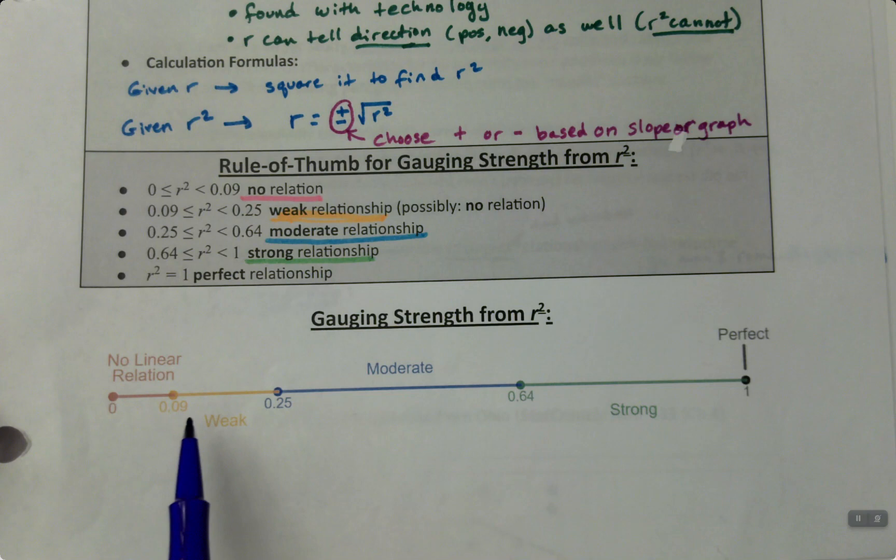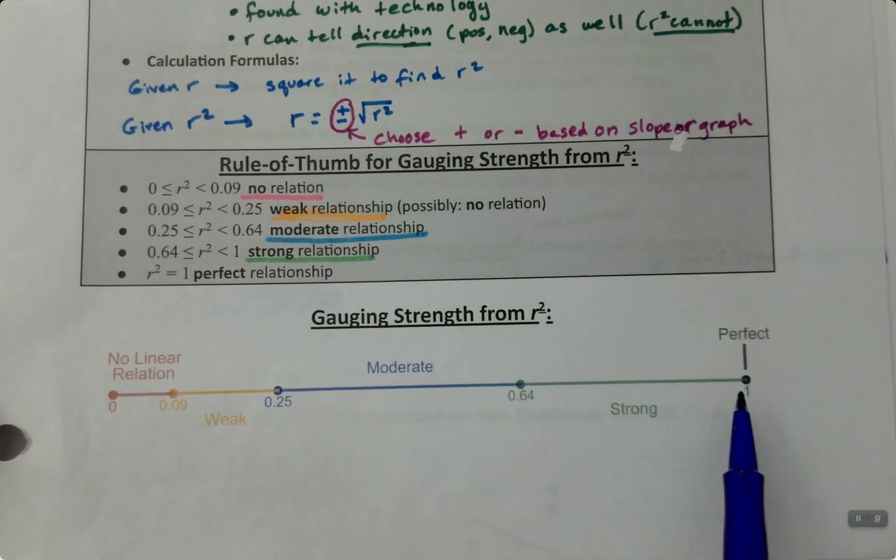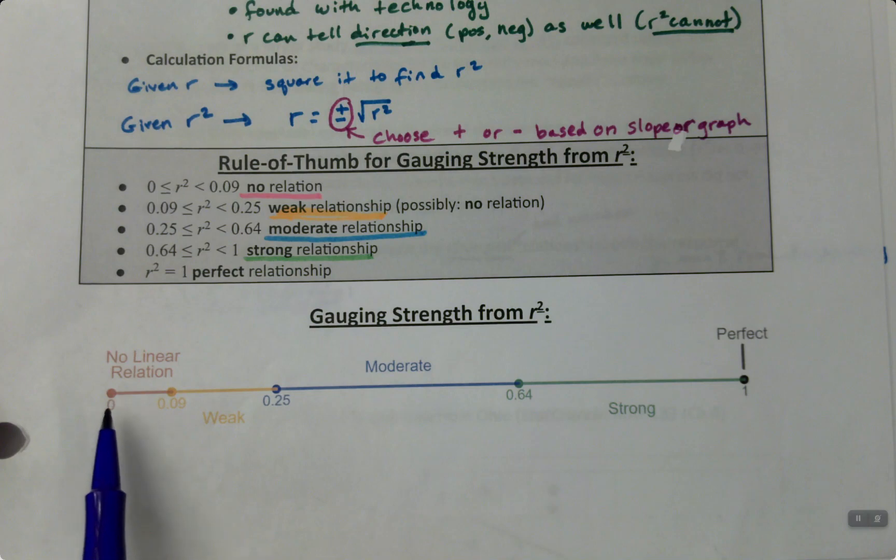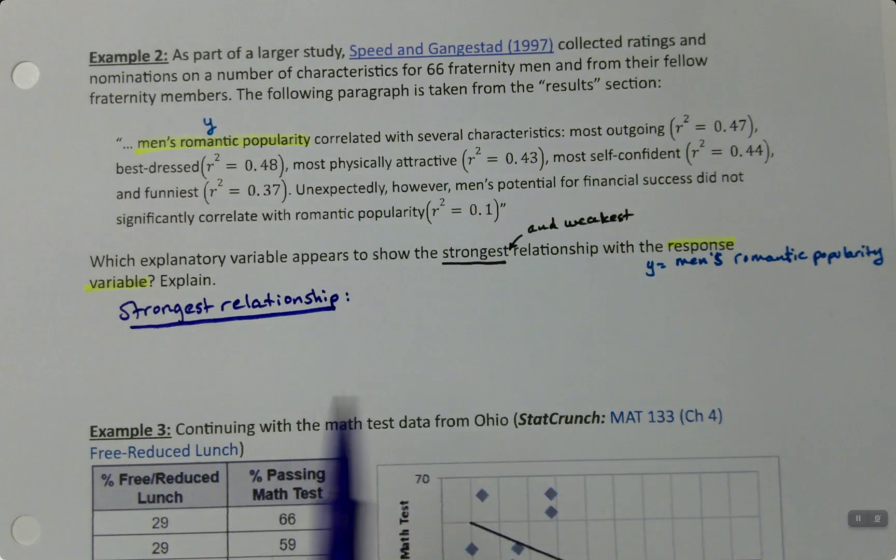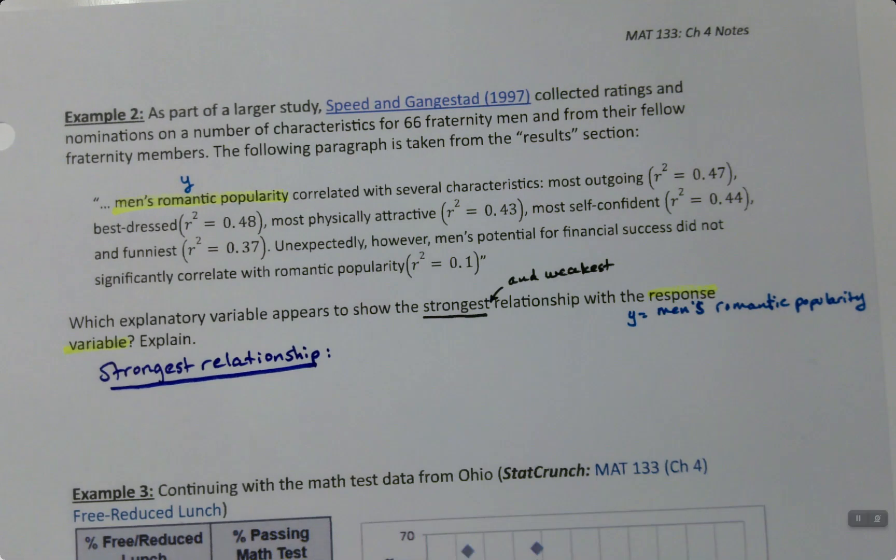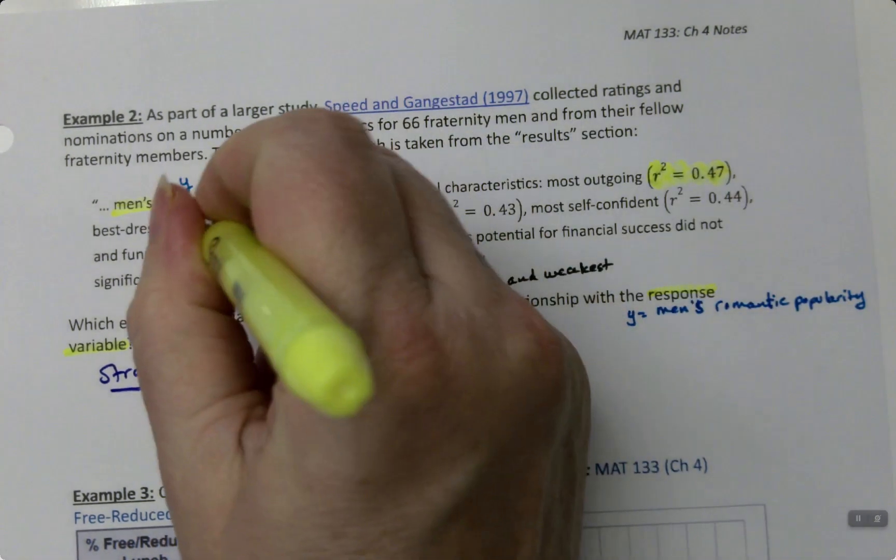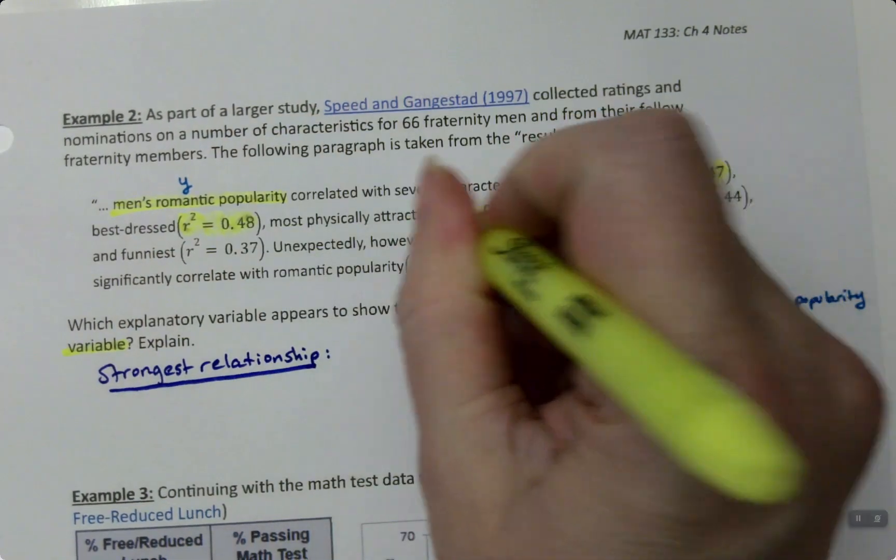Let's remind ourselves that when we look at R-squared and gauge strength, strong values are over here on this side, weak to no relation are over here. The closer the R-squared value is to 1, the stronger it is, and the closer to 0, the weaker it is.